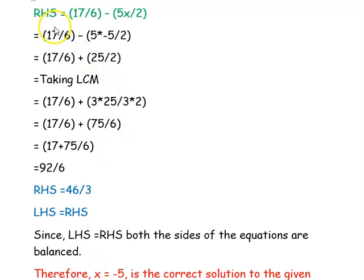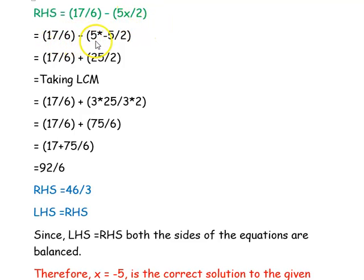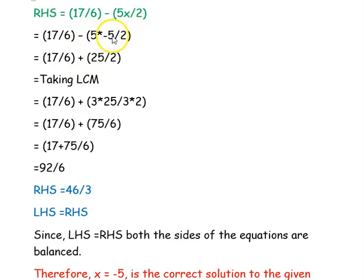We now substitute x equal to minus 5 in the right hand side, which is 17 divided by 6 minus 5x divided by 2. This becomes 17 divided by 6 minus 5 times minus 5 divided by 2. The two minuses become a plus, so 5 times 5 gives 25 divided by 2.